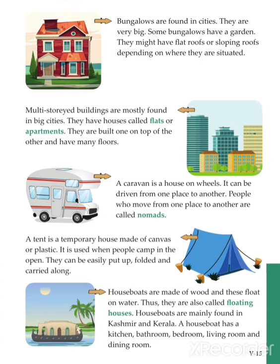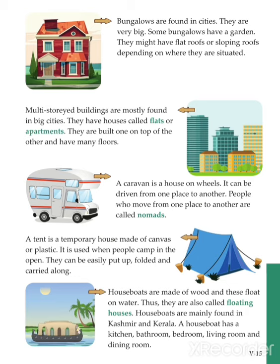The next type is a caravan. A caravan is a house which is built on wheels and can be moved from one place to another. Mostly nomadic people use this type of house. Nomadic people are people who don't stay in one place. Today we can also see this type of house on the road, used by actors.